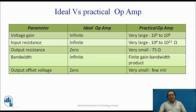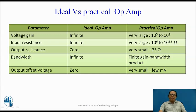Let us compare the ideal and a practical op-amp based on different parameters. For example, voltage gain: for an ideal op-amp, the voltage gain is infinite, but for a practical op-amp, it is very large, usually between 10 raised to 5 to 10 raised to 8. The input resistance of an ideal op-amp is infinite, but for a practical op-amp, it is between 10 raised to 6 to 10 raised to 12 ohm. The output resistance of an ideal op-amp is supposed to be 0, but in practice, a typical value for op-amp 741 is 75 ohm, which is very small.